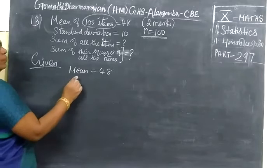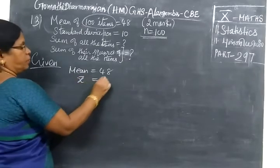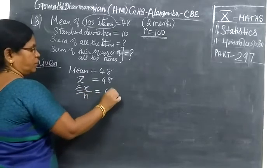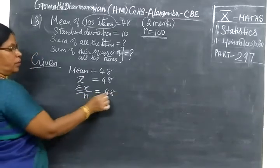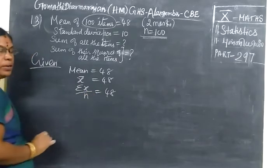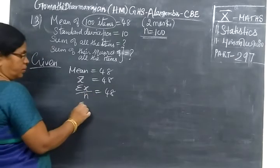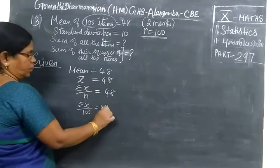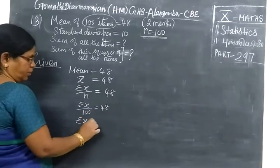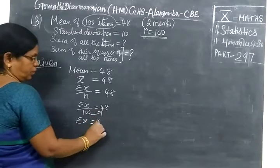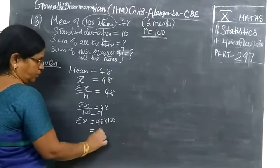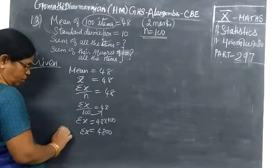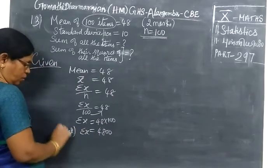Mean formula is X bar. X bar means sigma X by N equal to 48. Formula equal to answer. Sigma X, N is 100 equal to 48. So sigma X equal to 48 into 100 equal to 4800. Sigma means total, total of all the items.